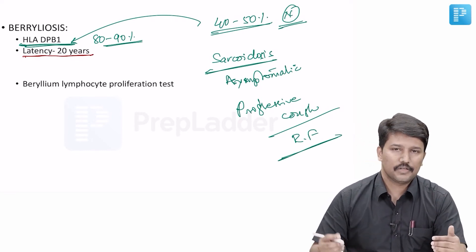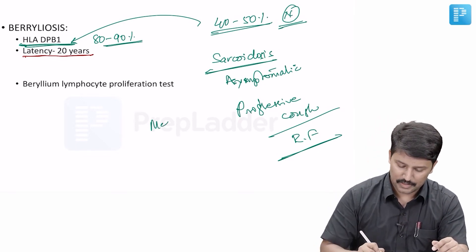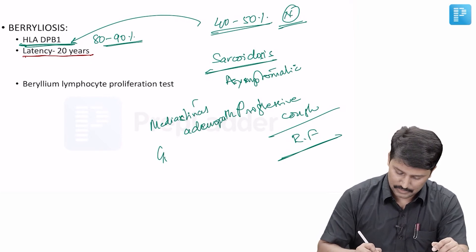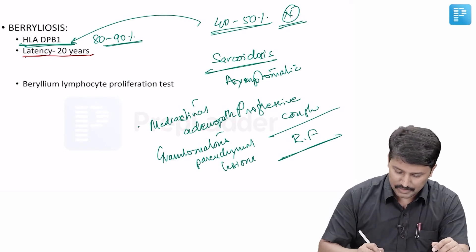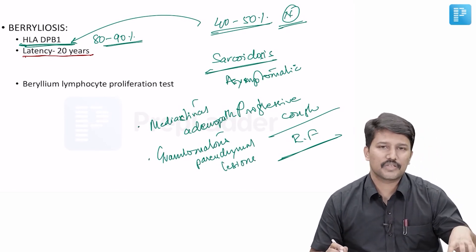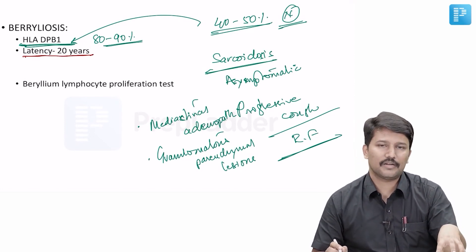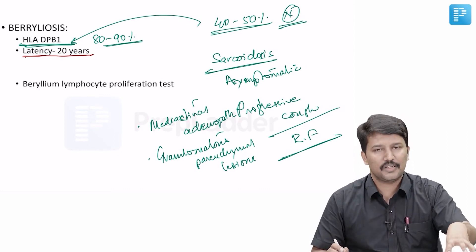Just like sarcoidosis, when you do imaging tests, what you will find is that these patients have mediastinal adenopathy and granulomatous parenchymal lung lesions. On imaging it will be very difficult to distinguish berylliosis from sarcoidosis, but if you take a proper occupational history and demonstrate that these patients had exposure to beryllium, you may be able to substantially prove your diagnosis.